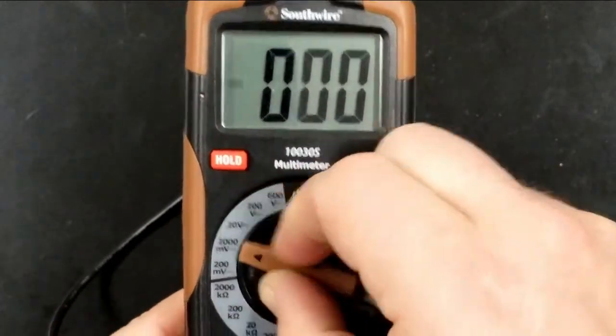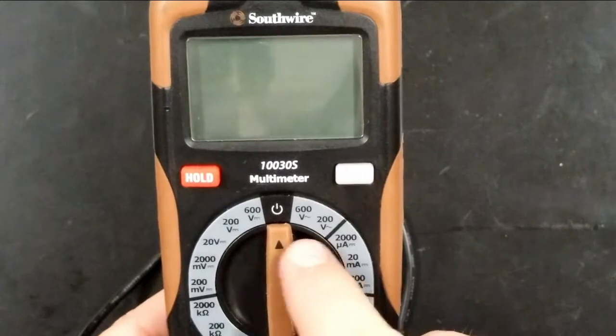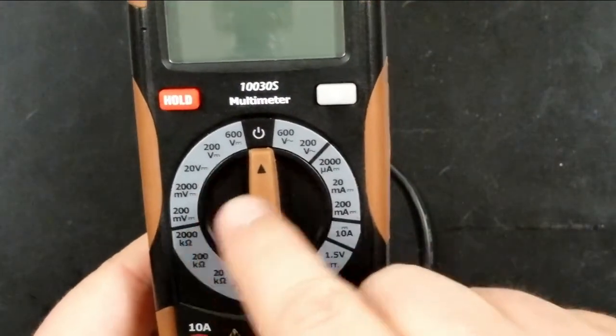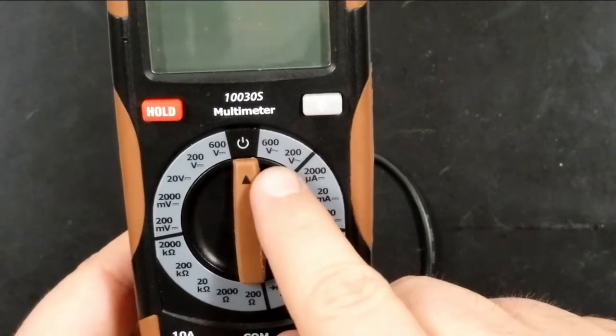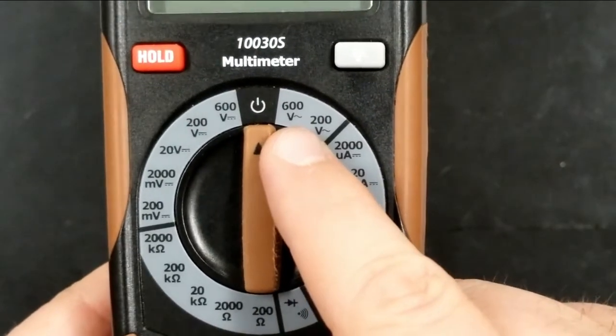The next thing we need to do is set this thing to the proper setting. This little dial here can be turned to a bunch of different settings. Off is straight up and down. If you'll notice, there are V measurements going around to the left and V measurements going around to the right.